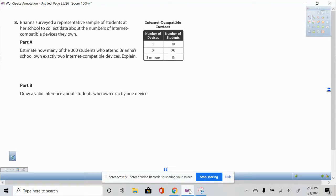Brianna surveyed a representative sample of students at her school to collect data about the numbers of internet compatible devices they own. Part A, estimate how many of the 300 students who attend Brianna's school own exactly two internet compatible devices.